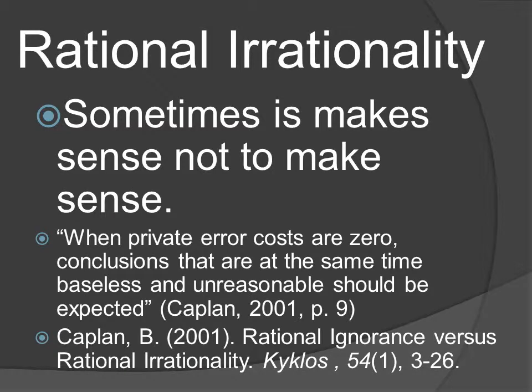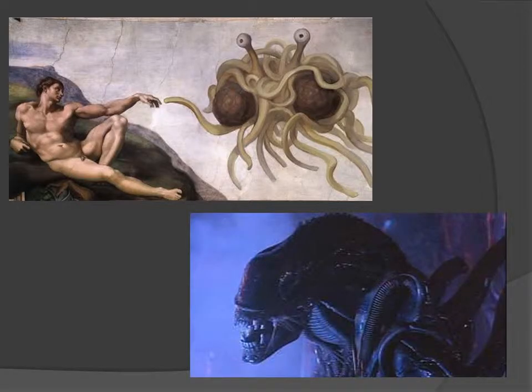Rational irrationality accepts the tenets of rational ignorance and builds on them to explain why people who are rationally ignorant nevertheless hold beliefs with such certainty. Bryan Caplan, who first coined this term in 2001, proposed that when private error costs are zero, conclusions that are at the same time baseless and unreasonable should be expected. This is because if there is little negative incentive against holding irrational beliefs, such as creationism or the belief in aliens, then there will be little reason to doubt them. If, however, it becomes costly to hold these beliefs, people will do so with less certainty.